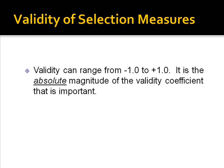You will remember that conceptually, reliability can only vary from 0 to plus 1. Validity, on the other hand, can vary from minus 1 to plus 1, and it is the absolute magnitude of the coefficient that is important.